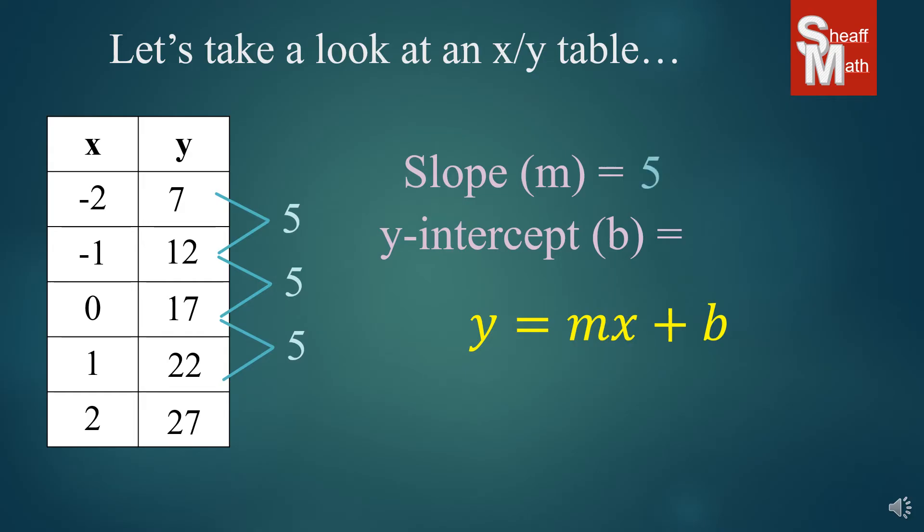Now the 0 term is our y-intercept. And so some students just put the first number there, that 7 there, by mistake. But it's actually the 0 term. Whatever the 0 term is, that's the y-intercept. And so this happens to be 17. So that's our b. So we put those in there. y equals 5x plus 17.